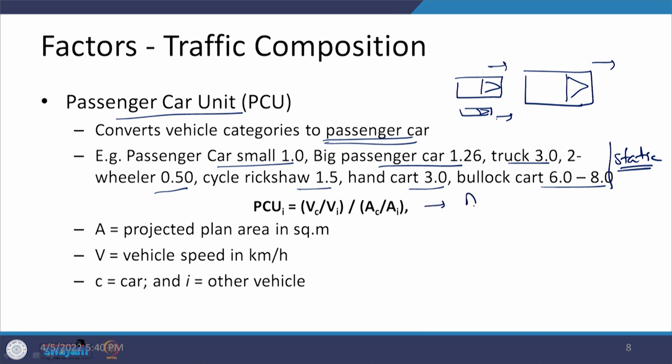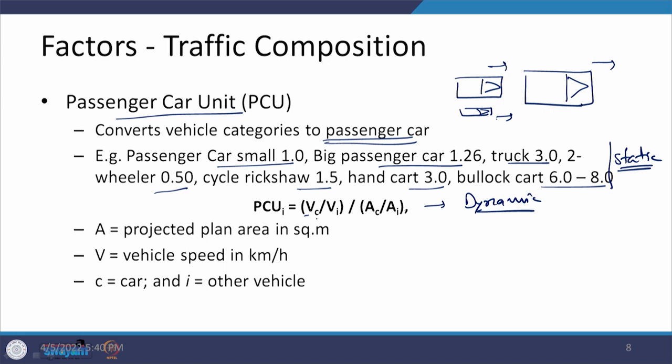Another approach is dynamic PCU. In this, the equation compares the projected plan area of a vehicle with respect to a car, and the speed of a vehicle with respect to a car. Here V is speed, C is for car, I is for any other vehicle, and A is the plan area in square meters. Using this, new PCU values are obtained for a given traffic stream — they are not constant but keep changing depending on changes in the stream.